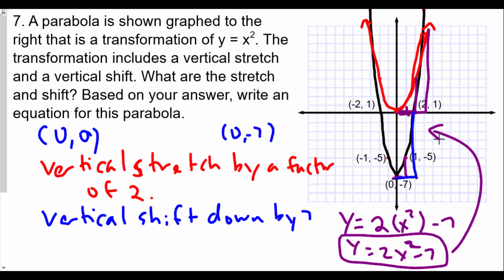So y equals two x squared minus seven is going to be the function we have here. Again, the y values are being stretched by a factor of two from the original one and then we are shifting everything down by seven.